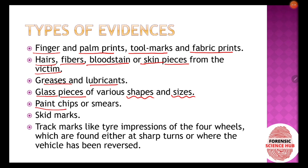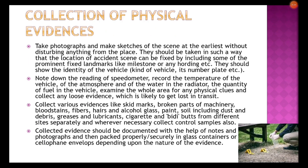Paint chips, skid marks, and track marks are also very common evidence found at vehicle accident scenes. Before collecting physical evidence, pictures and sketches must be taken to document how the crime scene originally appeared. Photos and sketches should be taken so the location can be fixed by including prominent fixed landmarks, such as a milestone or hoarding, and should also capture the vehicle's identity and number plate.